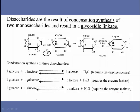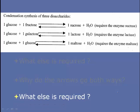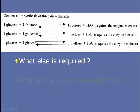Glucose plus glucose forms maltose, glucose plus fructose makes sucrose, and glucose plus galactose gives us lactose. What's also required is an enzyme. To form sucrose, we need the enzyme sucrase; to form lactose, we need lactase; and to form maltose, we need maltase. Notice that each enzyme ends in '-ase,' which is a good indicator that it is an enzyme. Most enzymes end in '-ase,' and the name also tells you which reaction the enzyme is controlling or catalyzing.